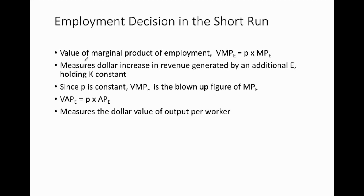To summarize: the value of marginal product of worker measures the dollar increase in revenue generated by an additional worker, holding capital constant. It is the marginal product of worker scaled up by price. The value of average product of worker is given by price times average product of worker, and it measures the dollar value of output per worker. That's all for this session. Thank you very much.